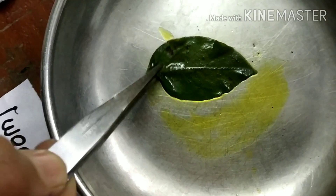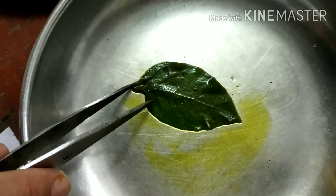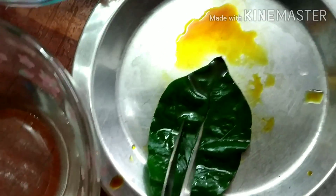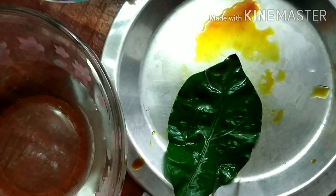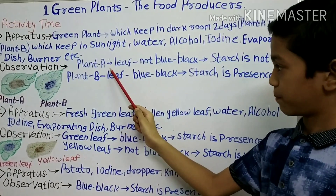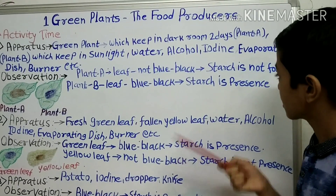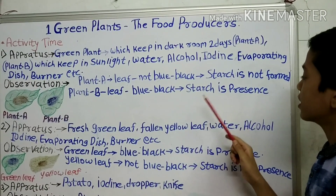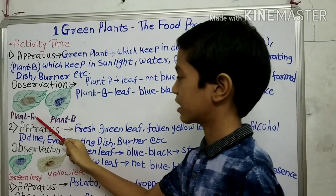Now we can see that Plant A has turned brown in color — it did not turn blue-black. But Plant B has turned blue-black in color. This is Plant A and this is Plant B. The blue-black color of Plant B is because starch is present.